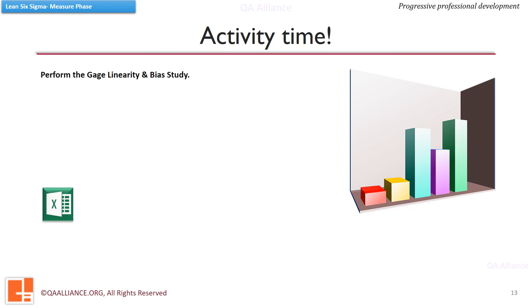Let us do some exercises. In the workbook you'll find the data on sheet 2.3.2. Perform a gauge linearity and bias study, analyze the output, and write your observations.